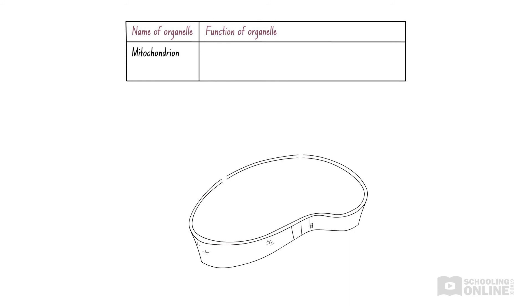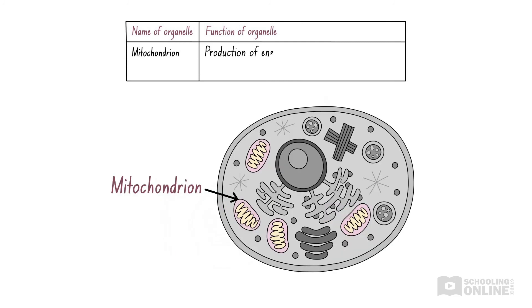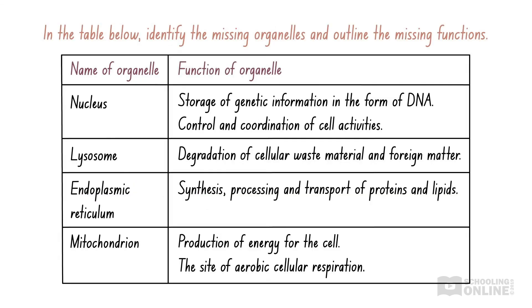Finally, we can outline the function of the mitochondrion. Earlier in this lesson, we compared the mitochondria to a power station. Like a power station, a mitochondrion generates energy to run the cell. The mitochondrion is the site of aerobic respiration — this is where glucose and oxygen react to form carbon dioxide, water, and energy. This table identifies the missing organelles and outlines the missing functions. Pause the video if you would like to read it for yourself.